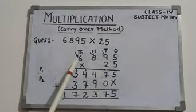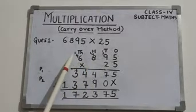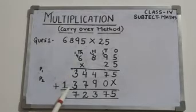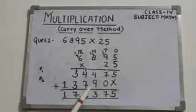2, 6 jump 12, add the carry over number 1, 12 plus 1, 13. This is product number 1 and this is product number 2. Add both products.